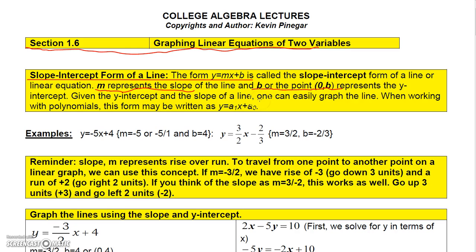Another way this might be written when working with polynomials is using coefficients like a-naught, a-1, a-2, and so forth, but here we're just going to stick with y equals mx plus b. For example, if you have y equals negative 5x plus 4, the coefficient of x is m, so the slope is negative 5 or negative 5 over 1, and the constant 4 is your y-intercept.